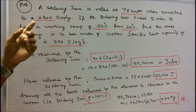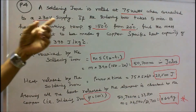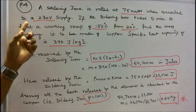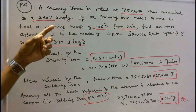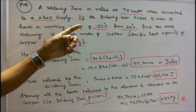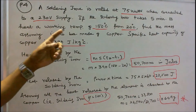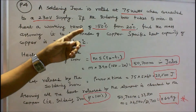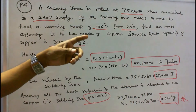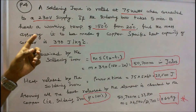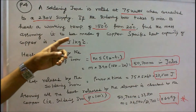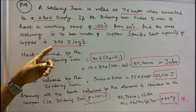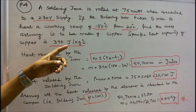Problem 4: A soldering iron is rated at 75 watts when connected to a 230 volt supply. If the soldering iron takes 5 minutes to heat to a working temperature of 150 degrees centigrade from 20 degrees centigrade, find the mass assuming it is made of copper. Specific heat capacity of copper is 390 joules per kg per degree centigrade.